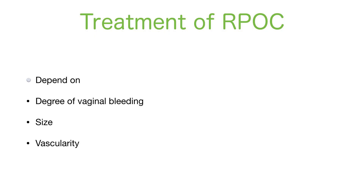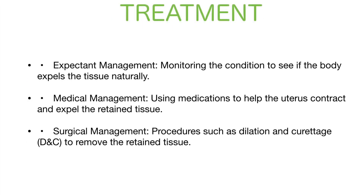Treatment of RPOC depends on degree of vaginal bleeding, size of RPOC, and vascularity within the RPOC — that is the grading. There are three forms of treatment: First, expectant management — monitoring the condition to see if the body expels the tissue naturally, which happens in Grade 0 RPOC. Second, medical management — medications that help the uterus contract and expel the retained tissue. Third, surgical management — dilatation and curettage to remove the retained placenta.